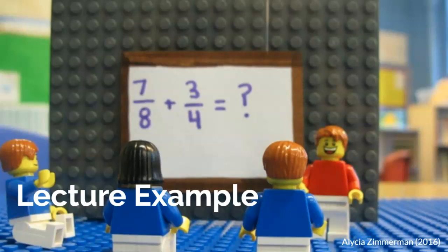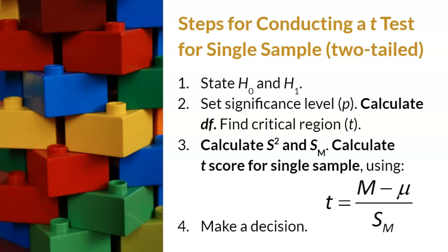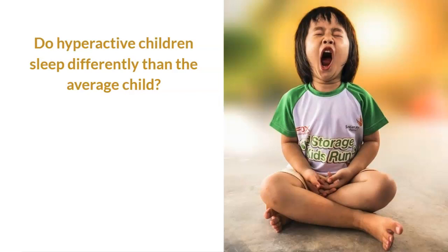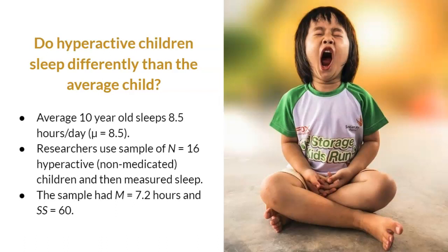Now that we have reviewed the steps of a t-test, are you ready to practice? I have one practice example for you. This is a short summary of the four steps described above — please note that these steps are for a two-tailed t-test for a single sample, with modifications noted in bold. Please pause the video to write down these steps on the video handout. This lecture example explores whether hyperactive children sleep differently than the average child. This research question relates to me personally, as I am the proud parent of a child diagnosed with ADHD, or attention deficit hyperactivity disorder.